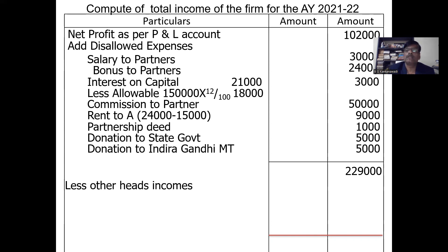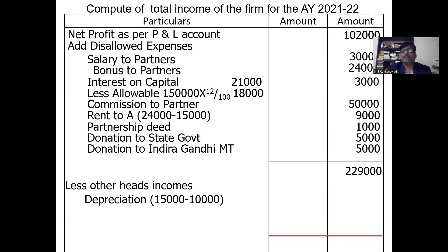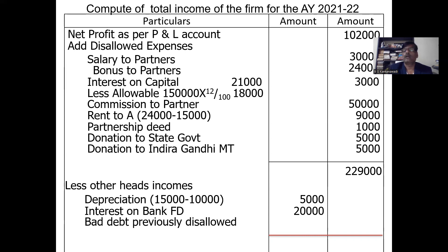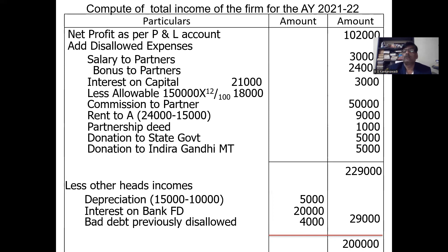Less allowable expenses and other head incomes: the only allowable expense is depreciation — allowable is 15,000, already charged is 10,000, so additional 5,000 is deductible. Next, interest on bank FD 20,000 and bad debt recovered previously disallowed 4,000 — these three total 29,000. Deduct 29,000 — book profit is 2,00,000.